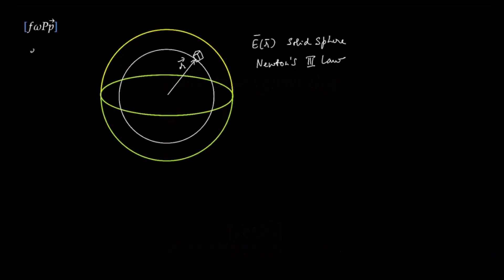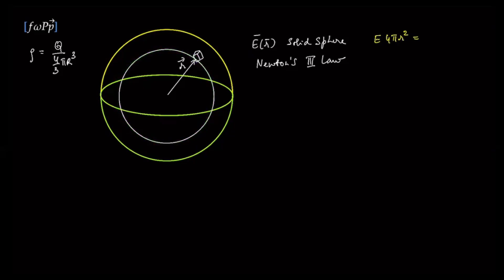This sphere has a total charge q, therefore the density is going to be q divided by the volume, and we are going to use this often in this calculation. The first step is to find the electric field at the point r, done by using Gauss's law. Gauss's law states that the total flux — the electric field magnitude at that point times the total surface area of this sphere — must equal the total charge enclosed, which is density times the volume inside, divided by epsilon naught.